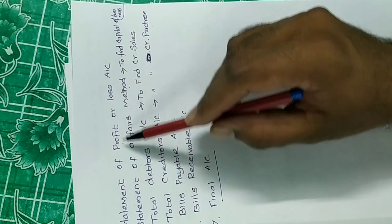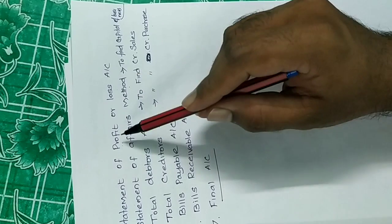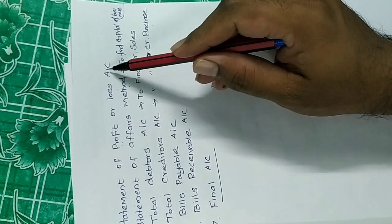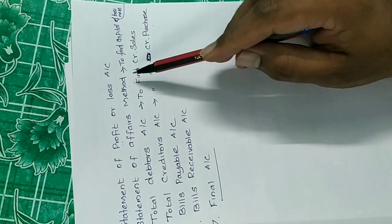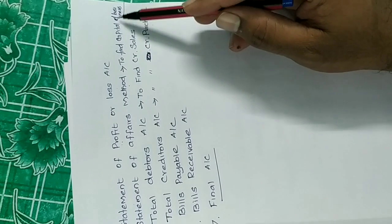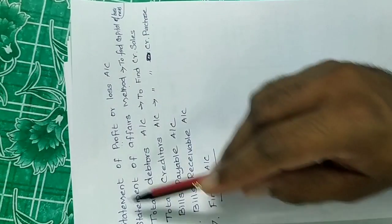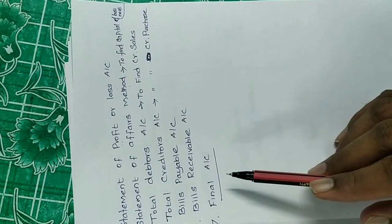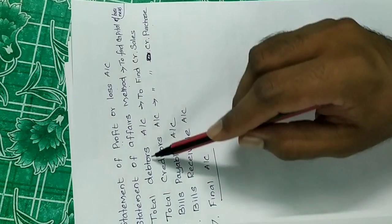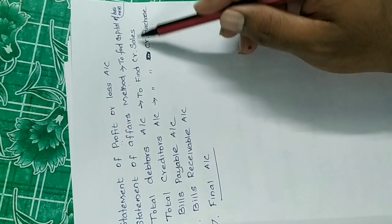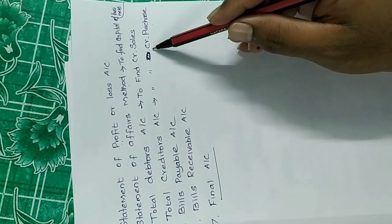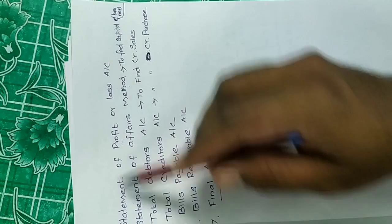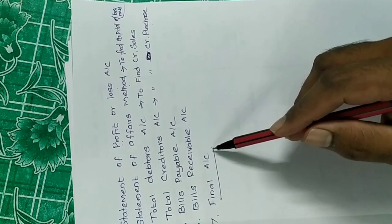The 1st stage gives the statement of profit or loss account. The 2nd, statement of affairs method, is to find the capital of the business. The 3rd, total debtors account, is to find the credit sales. The 4th, total creditors account, is to find the credit purchases. Next is bills payable account, bills receivable account, and the last stage is to prepare the final account.